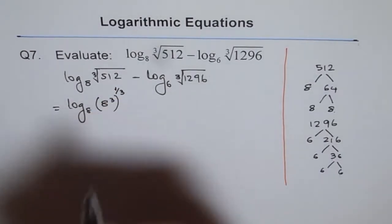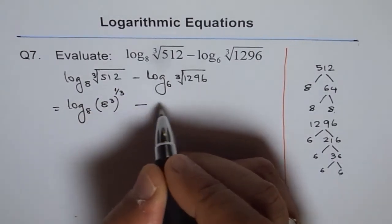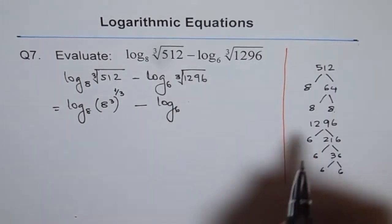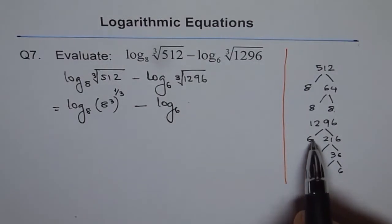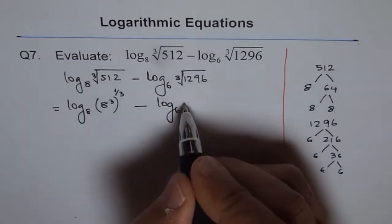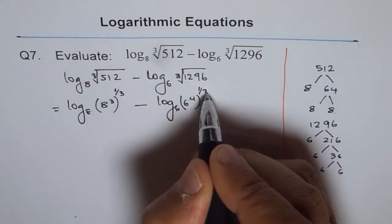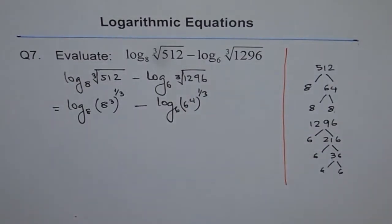Minus log base 6 of... 1296 could be written as 6 to the power of 4, so I get 6⁴ to the power of 1/3. Does it make sense? I think it does.